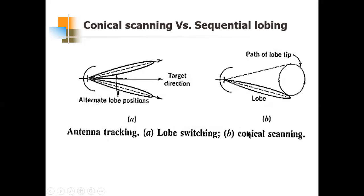Now let us move to conical scanning. The main logic we saw in the previous video: this is lobe switching or sequential lobbing, used for one angle coordinate where a single beam is switched between two positions, and you get which beam position gives you the higher amplitude signal. So for two angle coordinates you need four positions.